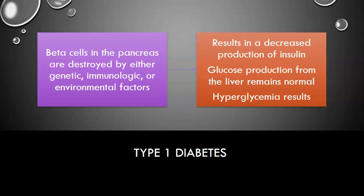The glucose production from the liver remains normal. Your pancreas is what is not working; your liver is still able to produce glucose. So when we have that mismatch, your hyperglycemic episodes are the result. These patients are dependent on IV or IM insulin.